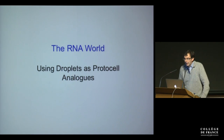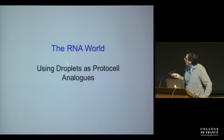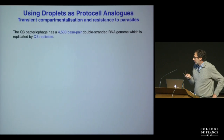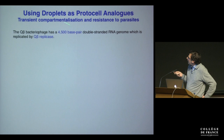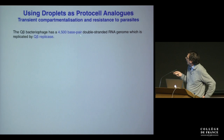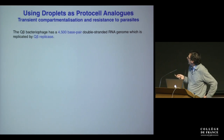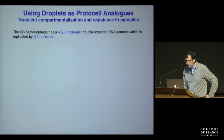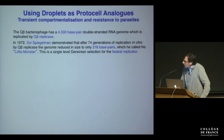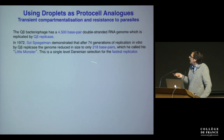I now want to move to a little example after life has got started — an investigation of the RNA world, where the idea is to use droplets as protocell analogs. The Q-beta bacteriophage has a 4,500 base pair double-stranded RNA genome which is replicated by the Q-beta replicase.